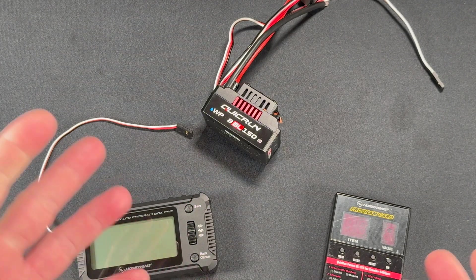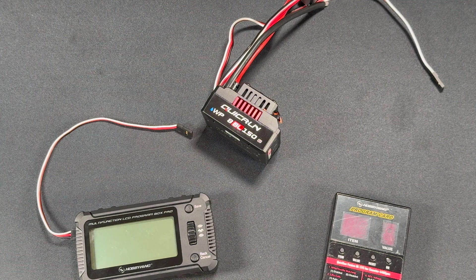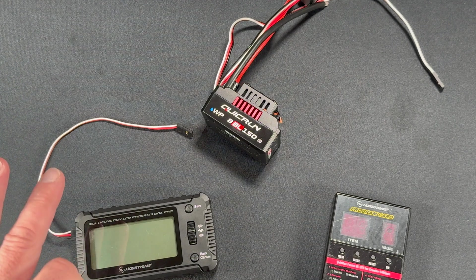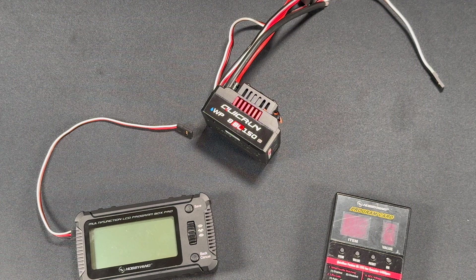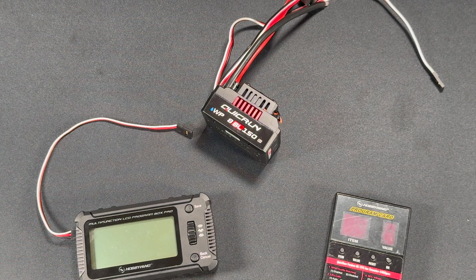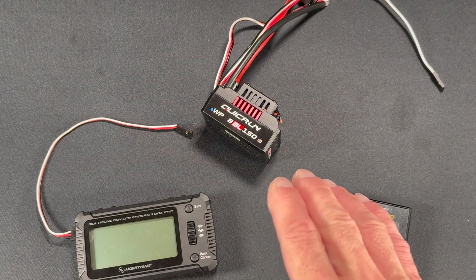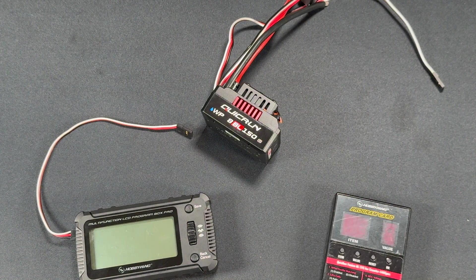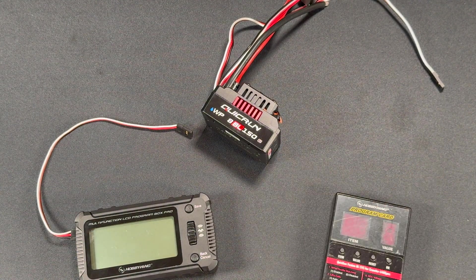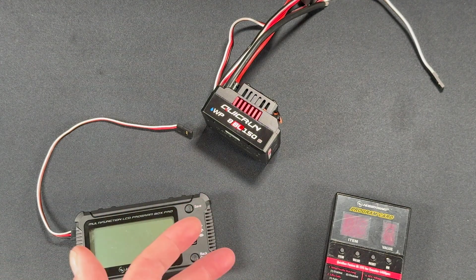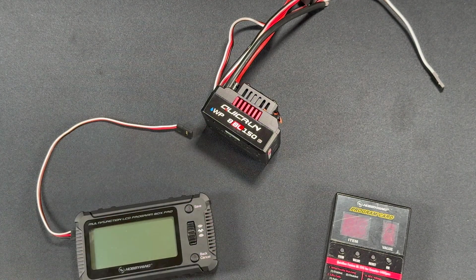The 8BL150G2 is also available in combos with a 4268 size or a 4274 size motor. That's 42 millimeter by 68 or 74 millimeter length. And they're available in two different KVs. The 4268 is available in a 2600 KV, and the 4274 is available in a 2000 KV. I actually have this setup in my seventh scale Mojave and it's pretty impressive. The stock setup that's in that truck isn't bad at all, but this thing for the value, I mean, it's $130, maybe $120 combo.